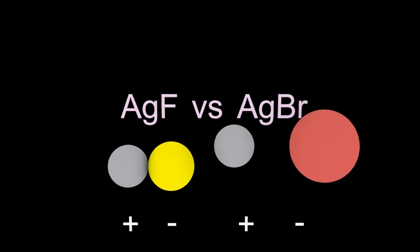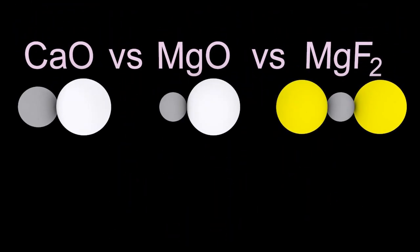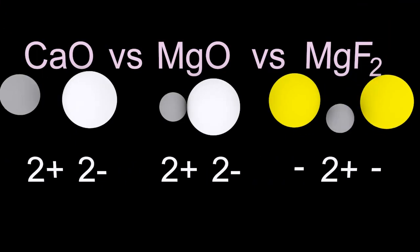And which of these three has the highest lattice energy? Yep, magnesium oxide. The ions there are small and have a high charge relative to the others. And we're done.